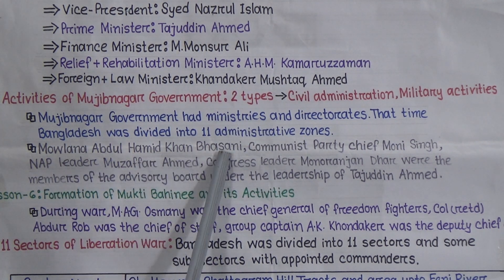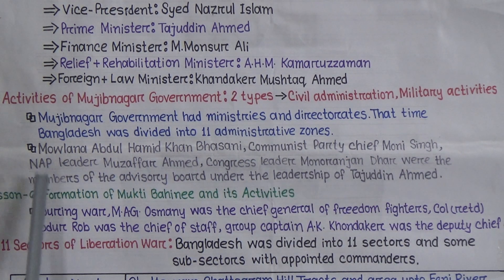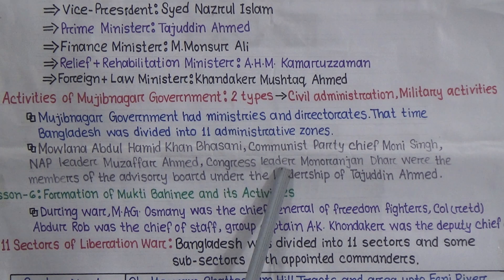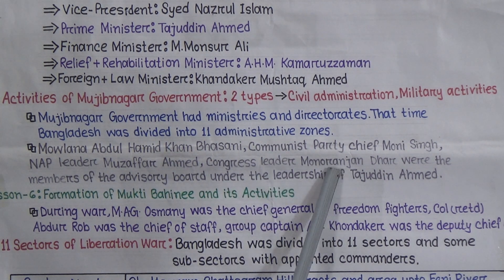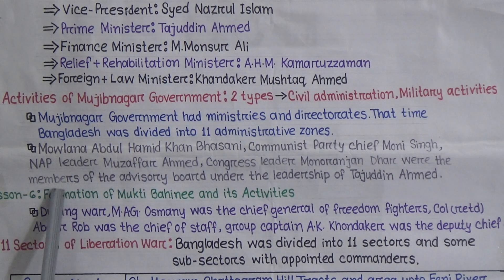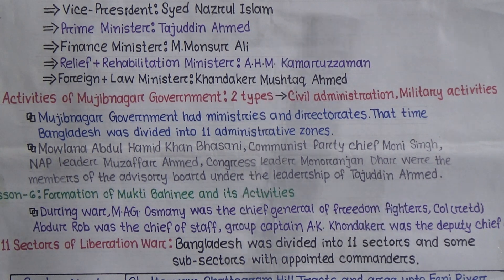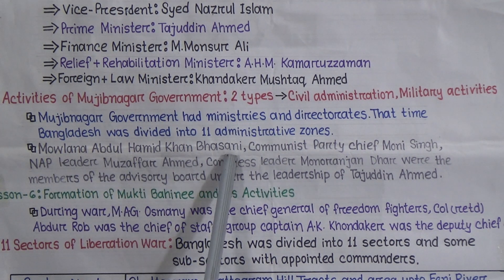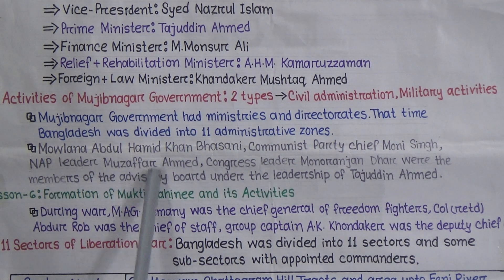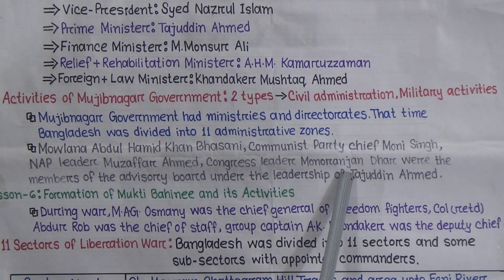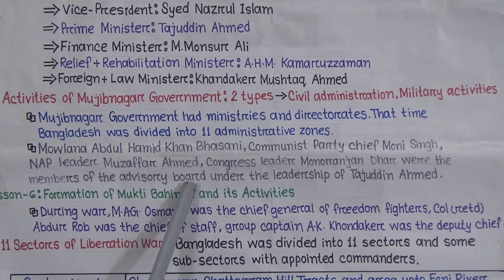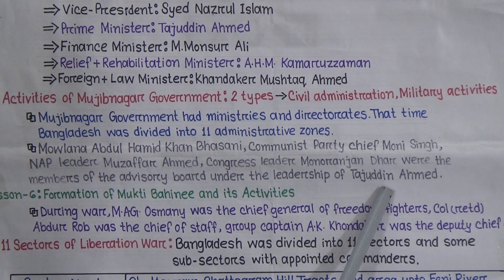Maulana Abdul Hamid Khan Bhashani, Communist Party chief Moni Singh, NAP leader Muzaffar Ahmed, and Congress leader Moniruzan Dhar were the members of the advisory board. This advisory board was led by Tajuddin Ahmed.